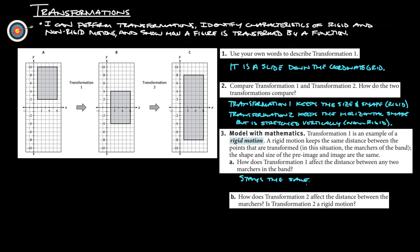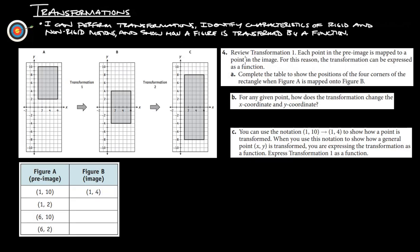And then in part B, how does transformation two affect the distance between the marchers? Is transformation two a rigid motion? We already talked about that it's not a rigid motion up here. And what it does is it basically just doubles the space between them vertically. Let's move on to a further part of this.